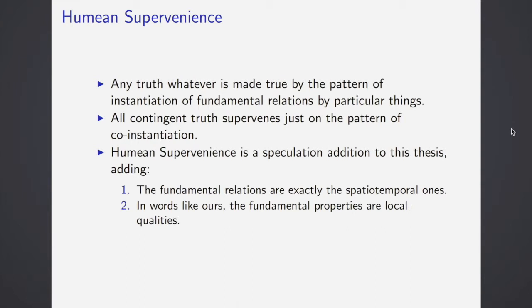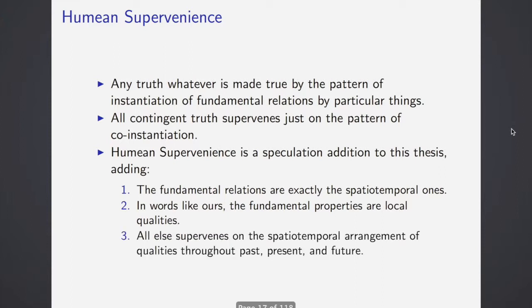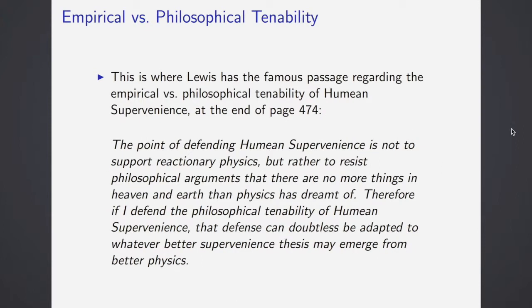In worlds like ours, the fundamental properties are local qualities, they're immediately present or something, and all else supervenes on the spatiotemporal arrangement of qualities throughout the past, present, and future. This is where he has this really interesting line, because there's been some attacks on Humean supervenience, on spatiotemporal qualities being the fundamental property. He says the point of defending Humean supervenience is not to support reactionary physics, but rather to resist philosophical arguments that there are more things in heaven and earth than physics has dreamt of.